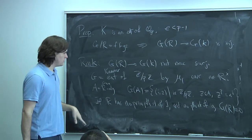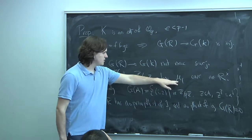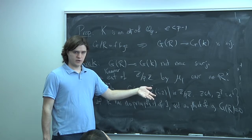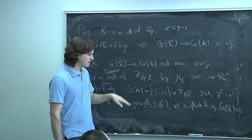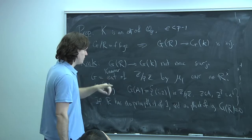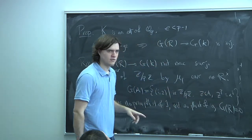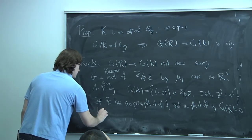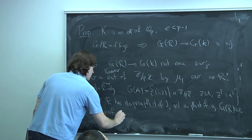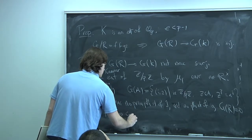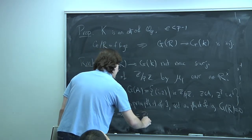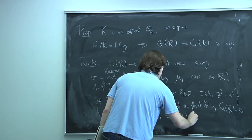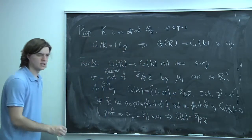On the other hand, if the residue field is perfect, then this is an extension of μ_p by ℤ/pℤ, and over a perfect field it splits. Concretely, if the residue field is perfect then A has a p-th root, so over the residue field G is just the product ℤ/pℤ × μ_p, which means it has many k-points. So the map is not surjective.